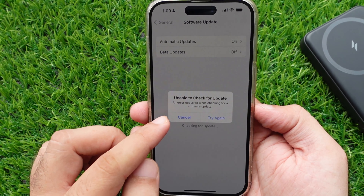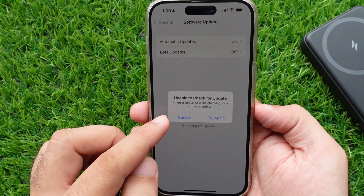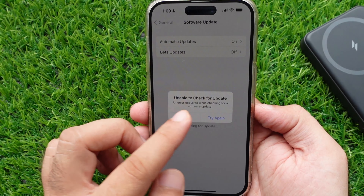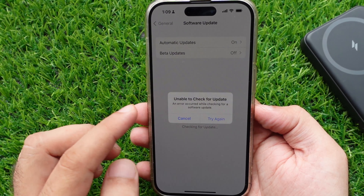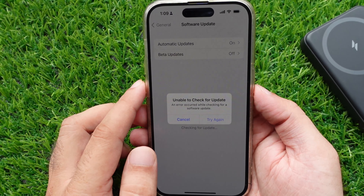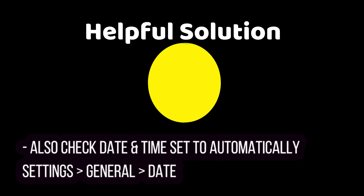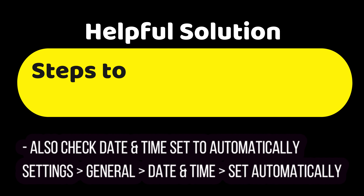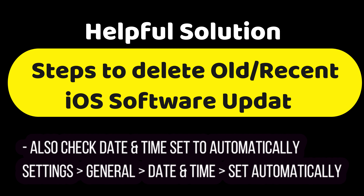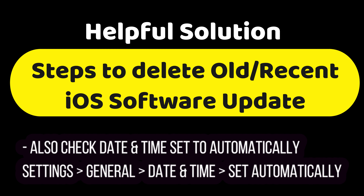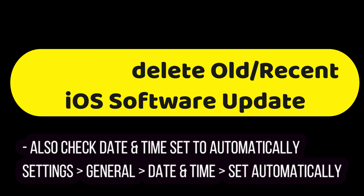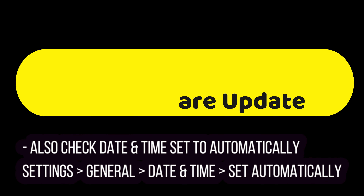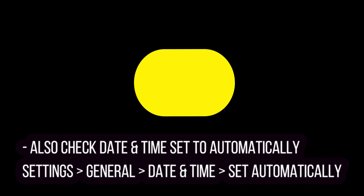For some users, Install Failed in between because of corrupted software downloaded on their iPhones. First, delete the old or recently downloaded iOS file from your iPhone storage. This will delete the downloaded iOS software update from your iPhone so you can re-download it.